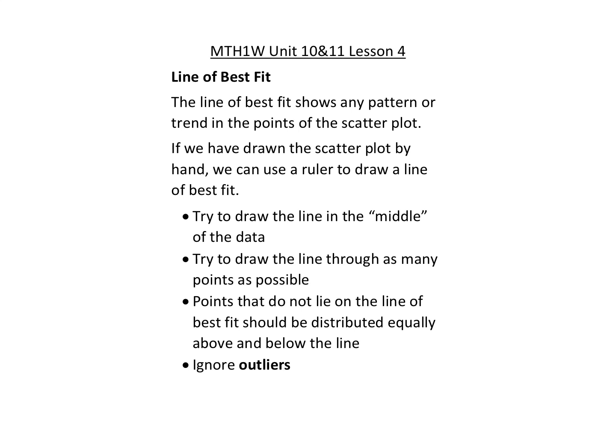In this lesson we are going to draw a line of best fit once we have created a scatter plot. The scatter plot allows us to plot the points and look at the relationship between the independent and dependent variables. We are looking at whether there is a correlation between these variables — a positive correlation, a negative correlation, or no correlation.